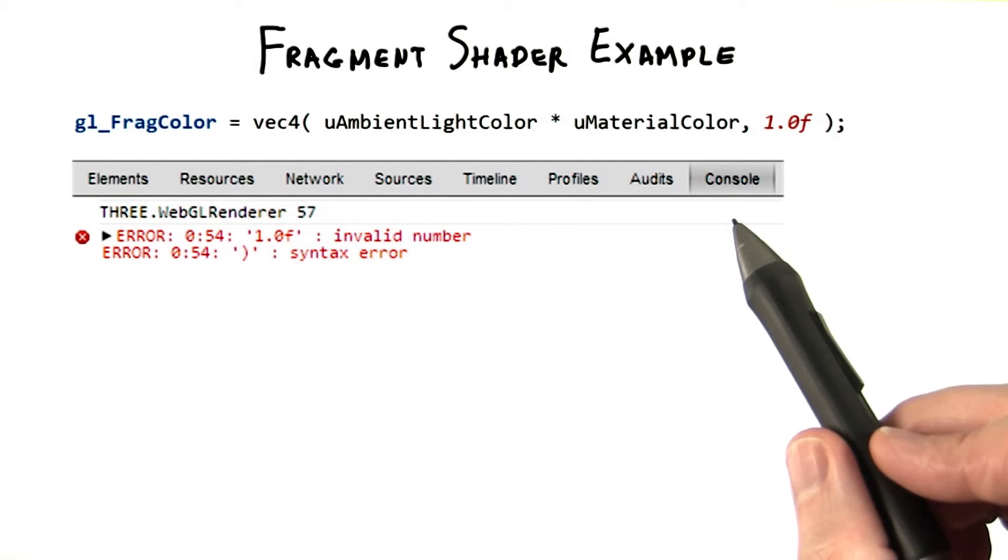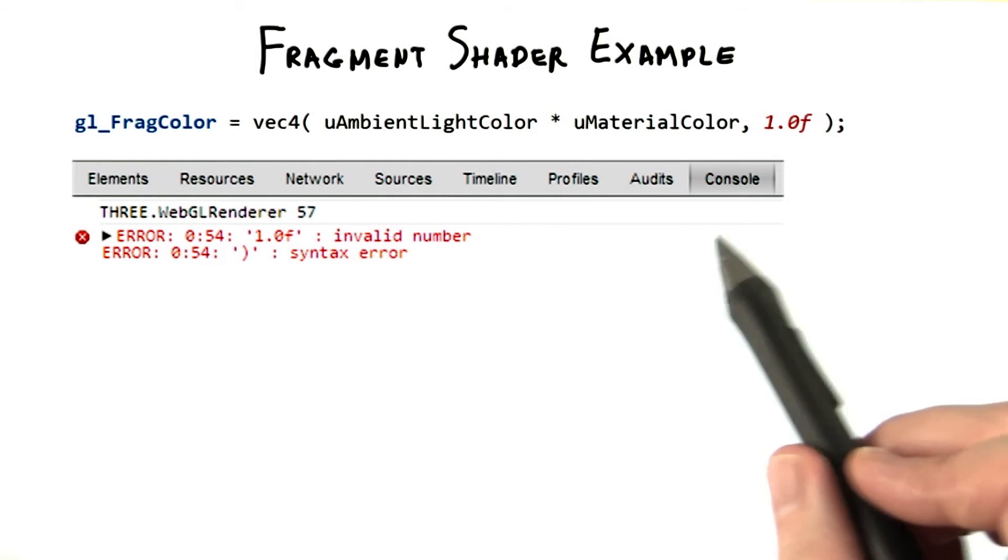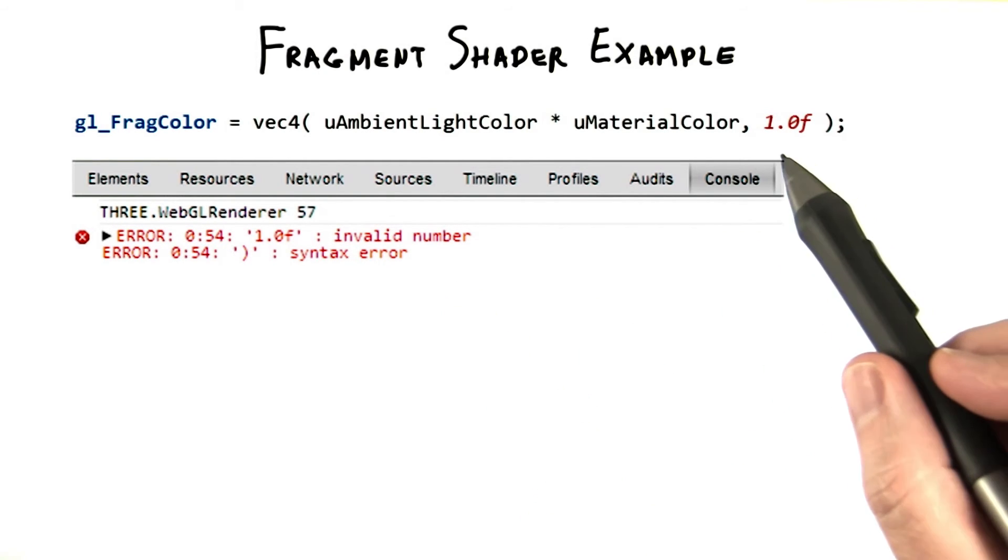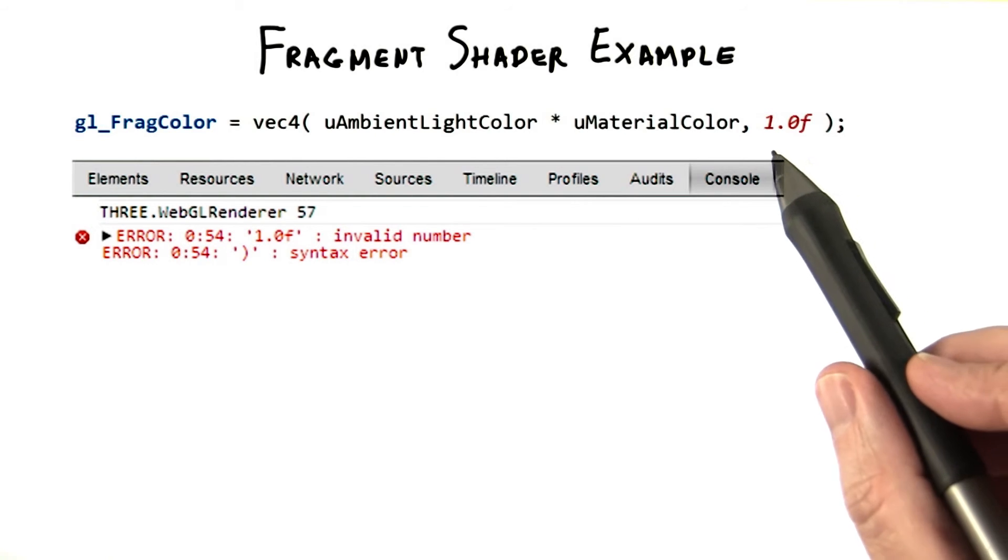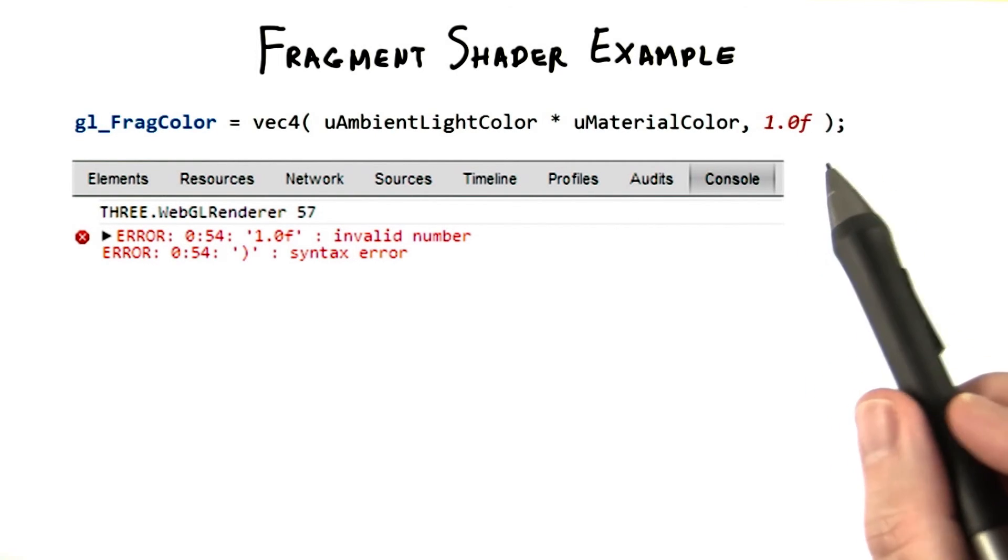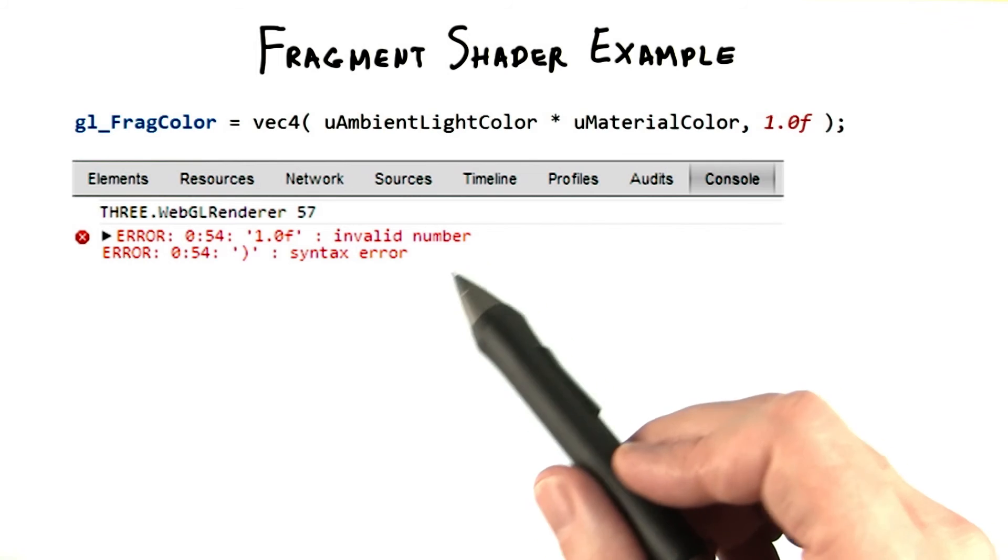For debugging shader code, the browser's debug console can often give useful errors. For example, in this line of code, I've put a representation for a floating point number. It's perfectly valid in C, but is not part of the GLSL language. So it was flagged here.